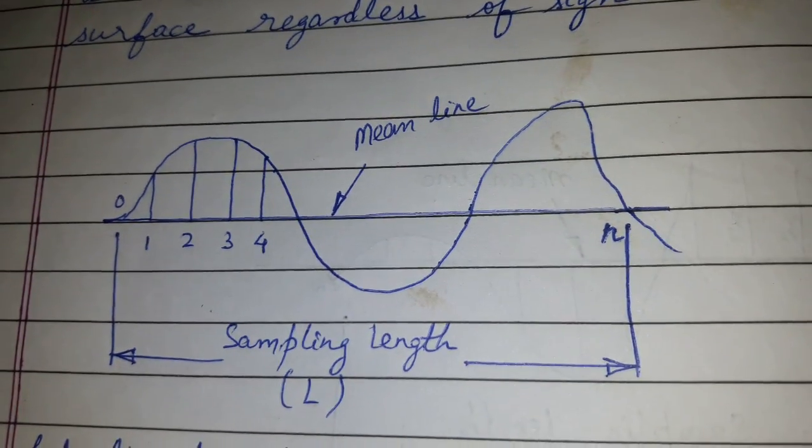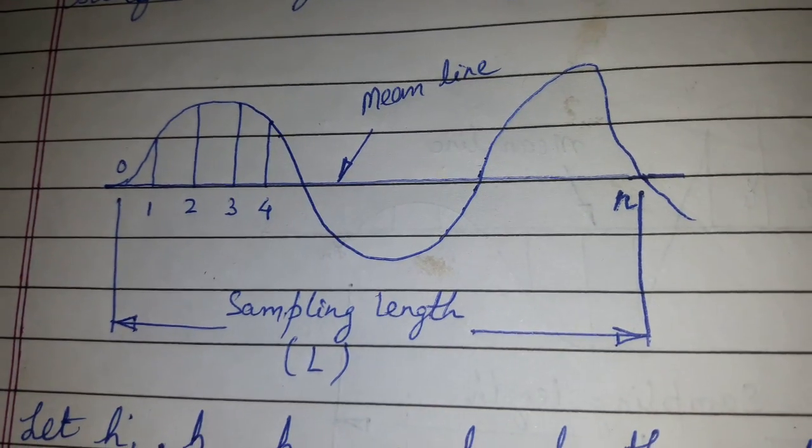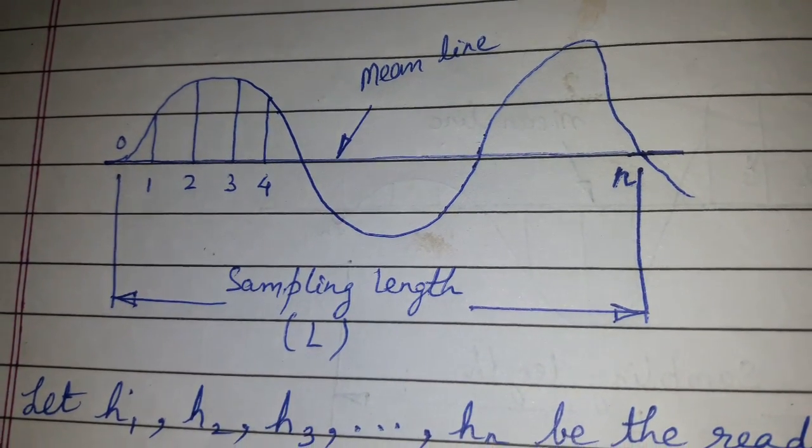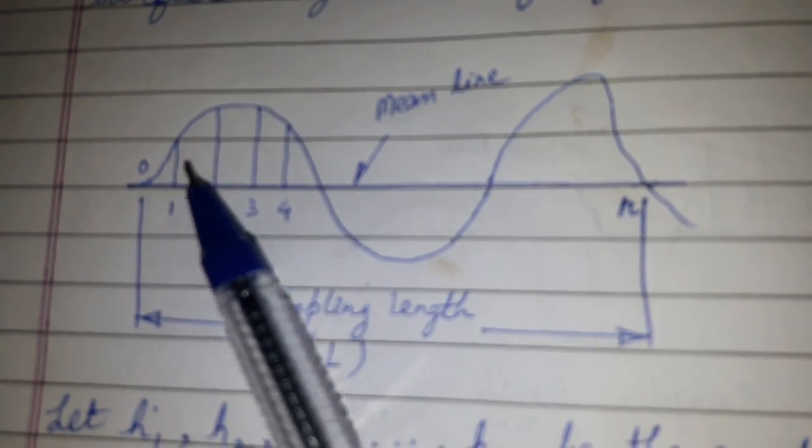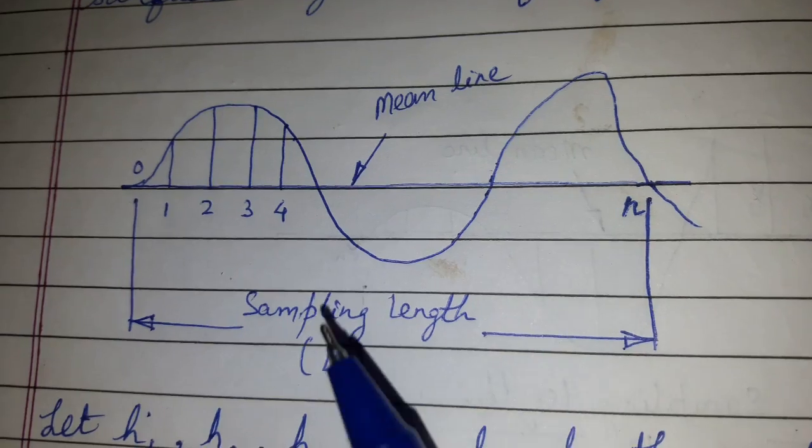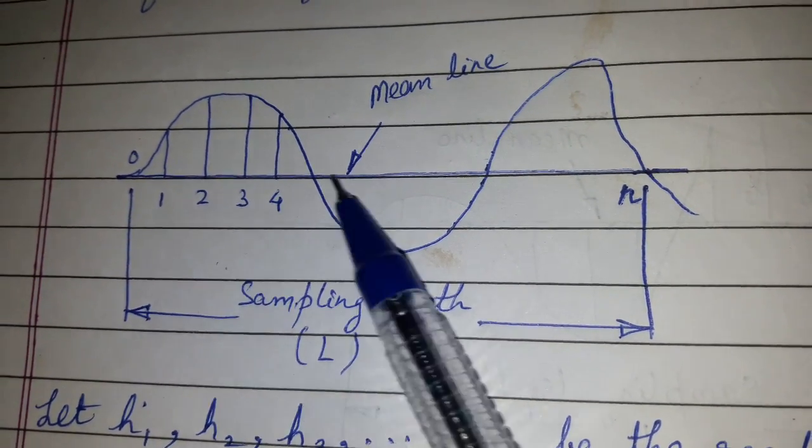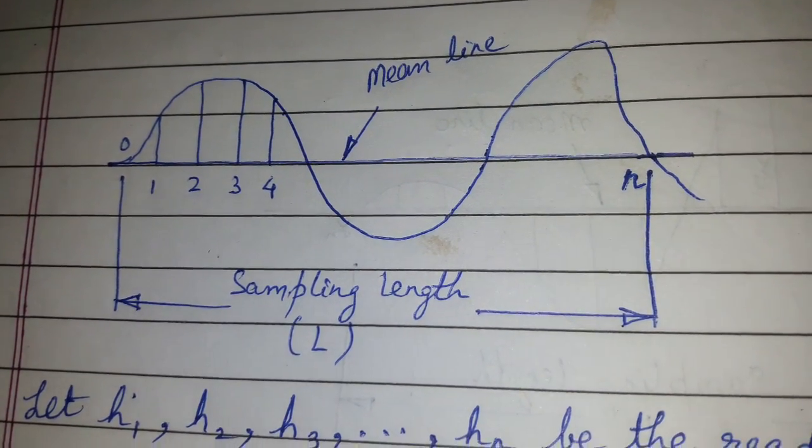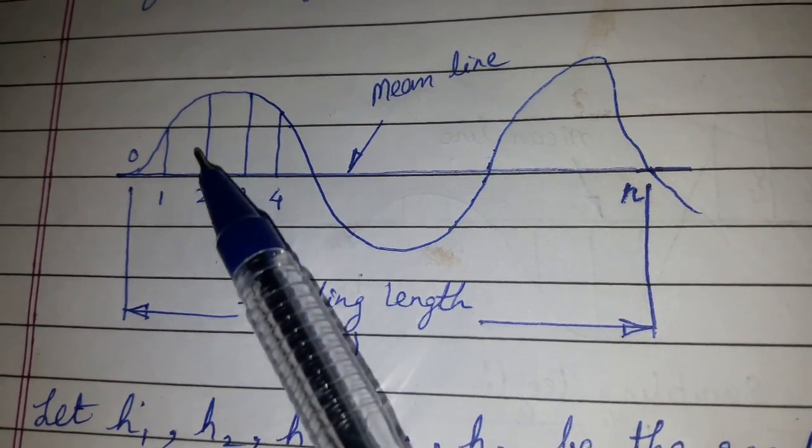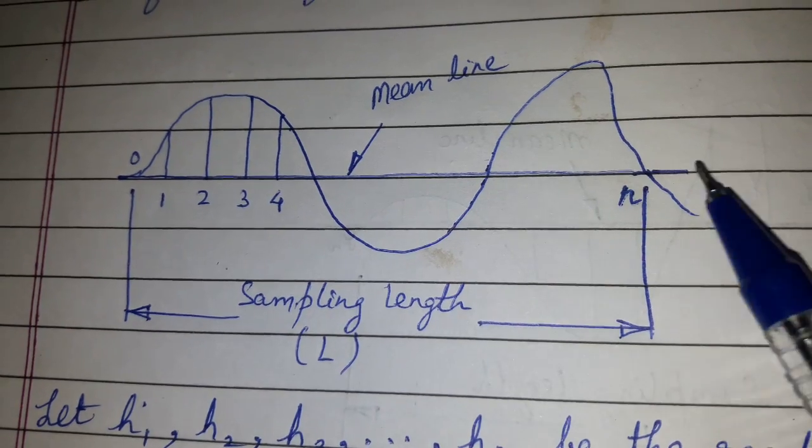Hi friends, today's topic of discussion is centerline average method or CLA value. CLA value can be defined as the average height of all the ordinates from mean line regardless of sign. So if h1, h2, h3 up to hn